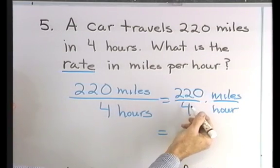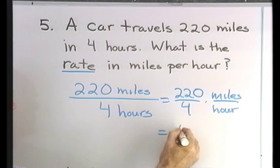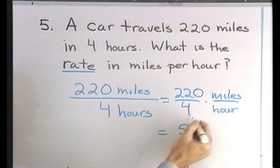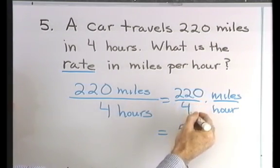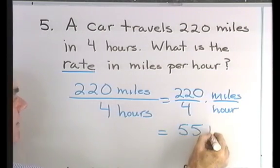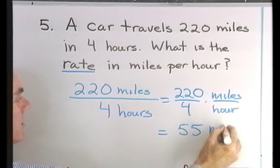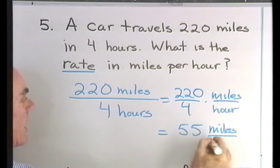Now 220 divided by 4: I'll divide 4 into 22, that's 5, and then when I do the rest of the division I end up with another 5. So 55 miles per hour.